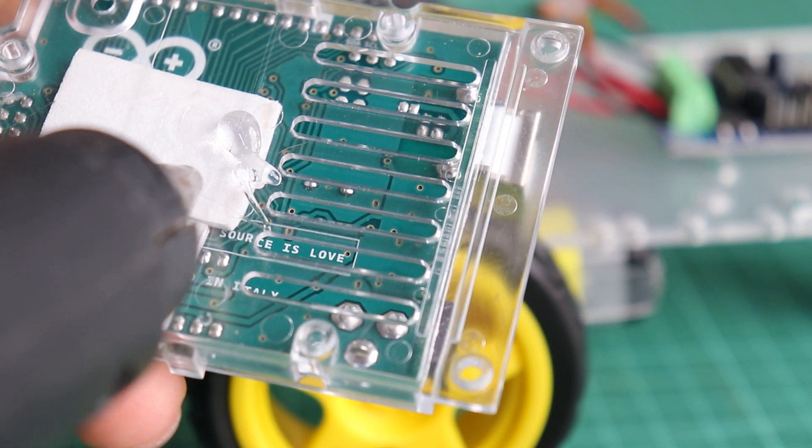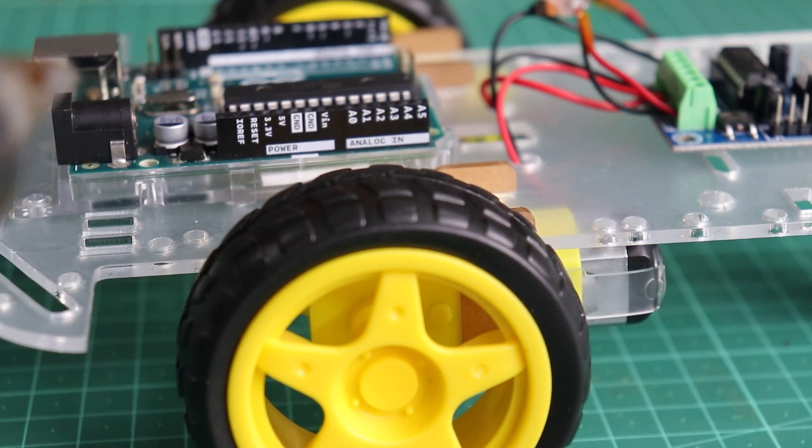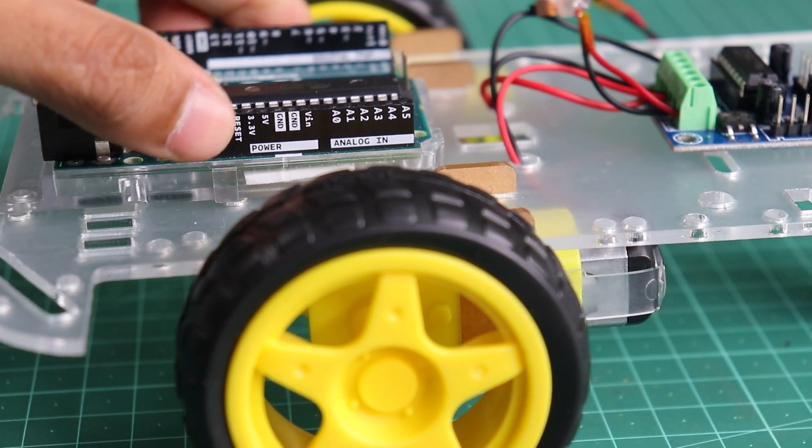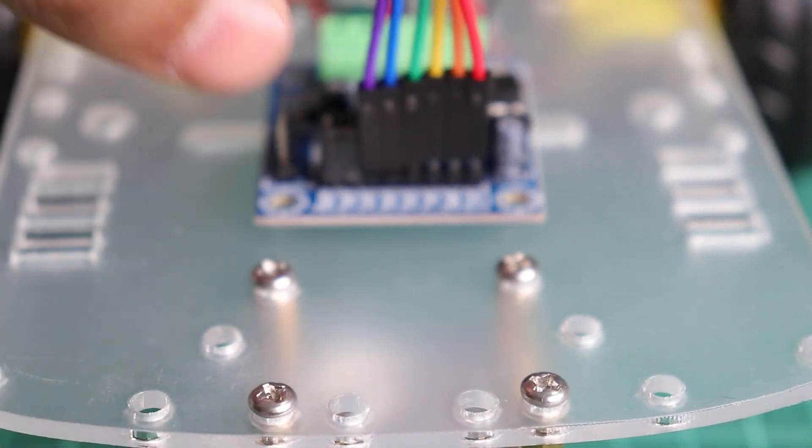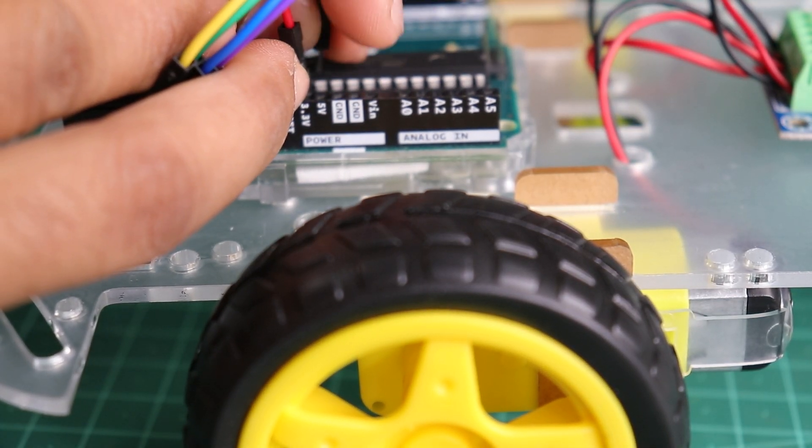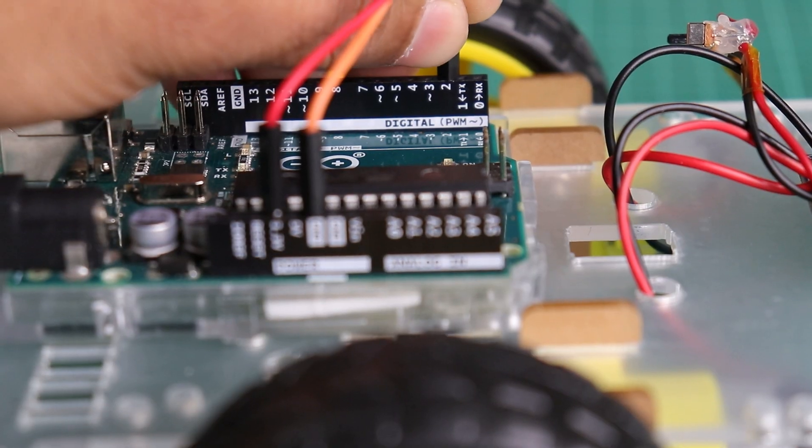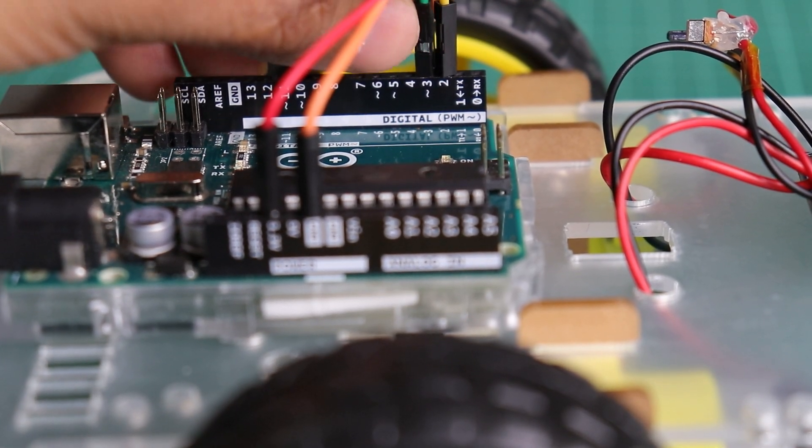Now stick the Arduino Uno board to chassis using hot glue. Connect the Uno to motor driver using following pins: VCC ground to 5 volt and ground of Arduino, and IN1, IN2, IN3, and IN4 to D2, D3, D7, and D8 of Arduino.